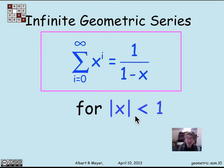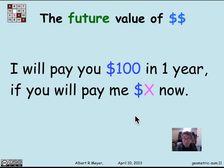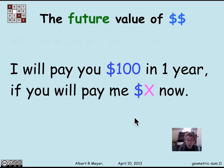Now let's look at a typical application having to do with the future value of money. Suppose I promise to pay you $100 in one year if you pay me a fixed amount now — call it x dollars. The puzzle is: how much is $100 worth if you can't have it now and can only have it in one year? What would be a fair amount for you to pay me, so that I pay you $100 in one year and nobody loses?